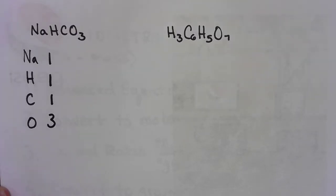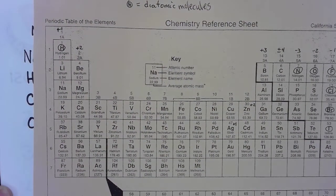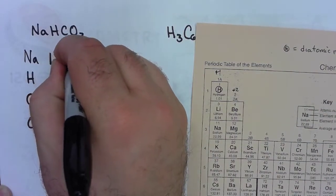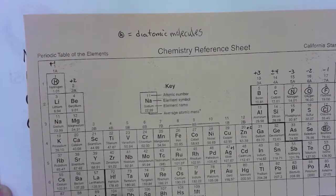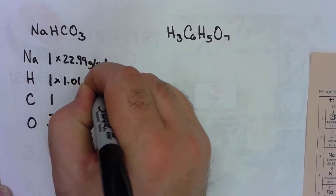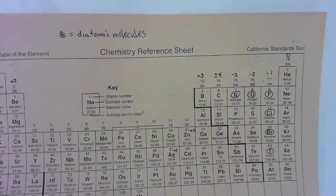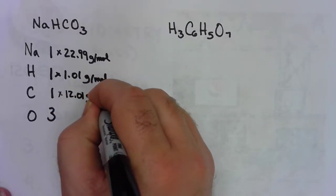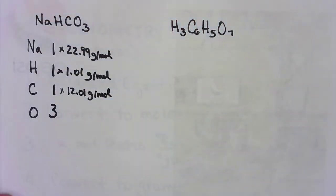Then we go to the periodic table and look for the atomic masses of each one. Sodium is 22.99 grams per mole, hydrogen is 1.01, carbon—very important element—12.01 grams per mole, and oxygen is also important. We use it a lot. 16.00 grams per mole.